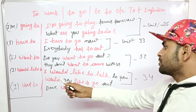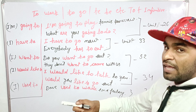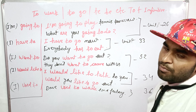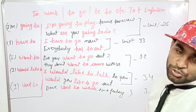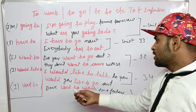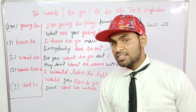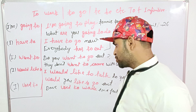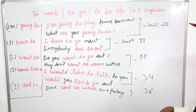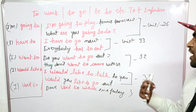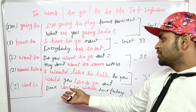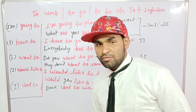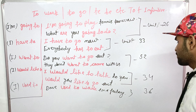Unit 52: Would like. 'I would like to talk to you' — मैं आपसे बात करना चाहूंगा. 'Would you like to go out?' — क्या आप बाहर जाना चाहेंगे? Unit 34: Used to. 'Deb used to work in a factory' — Deb फैक्ट्री में काम किया करता था.